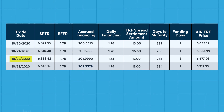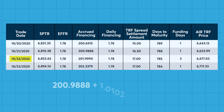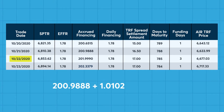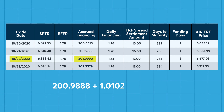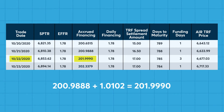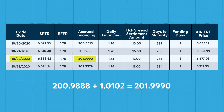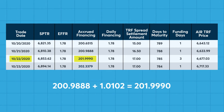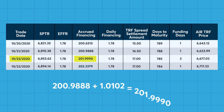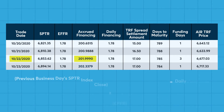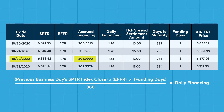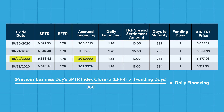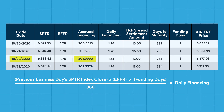Assume on the next day, October 22, the accrued financing has increased by the daily financing value and is now equal to 201.9990. The daily financing amount is determined by the previous business day's SPTR index close multiplied by the EFFR multiplied by funding days divided by 360.